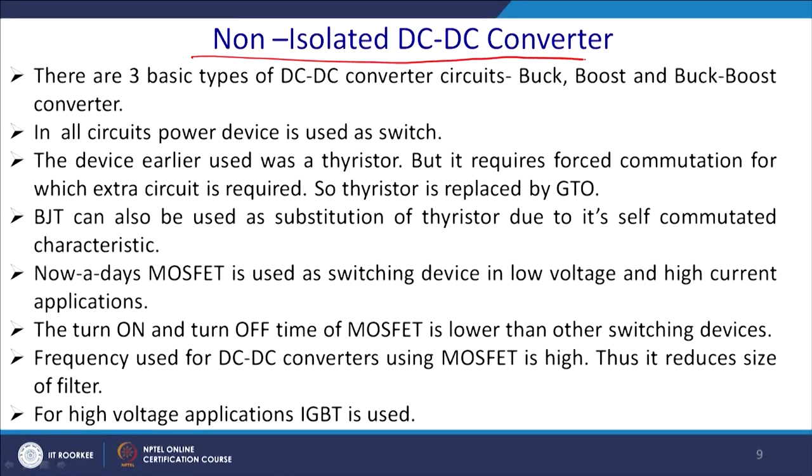Assume constant or ripple DC is available and a load requires a specific DC voltage. Applications include water purification (high current, low voltage DC), SMPS, mobile chargers, and laptop chargers — all essentially DC loads. Today we discuss the non-isolated DC-to-DC converter; the isolated type provides galvanic isolation between input and output stages.